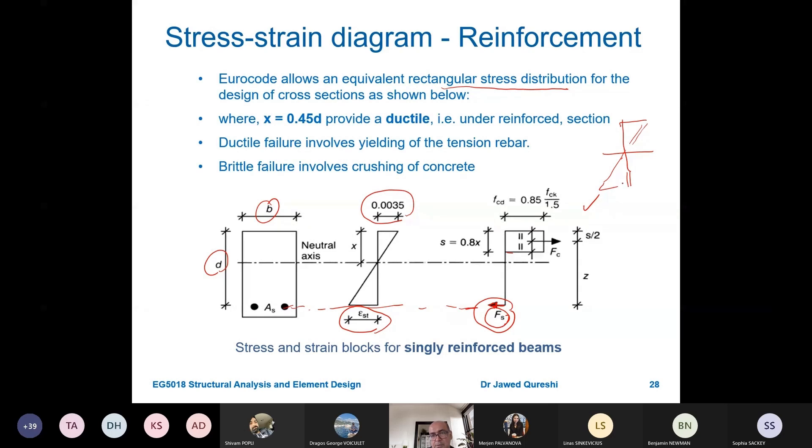Euro Code 2 uses the simplified rectangular stress distribution which means that the force in tension is only concentrated at the center of this steel bar. The entire tensile force is taken by the steel bar. We don't have any tension for concrete. The Euro Code approach is to approximate it like a rectangle. At the center we have this force in concrete, and s is a distance from this concrete block to the top which is 0.8x, where x is the distance from neutral axis to the top fiber.